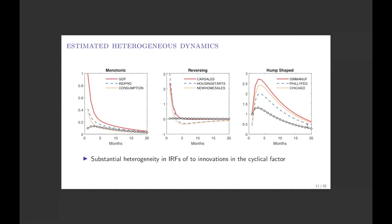If we allow each variable to have its own type of impulse response, the homogeneous assumption is clearly very restrictive. GDP and industrial production have a monotonically decaying impulse response. Investment-related variables — car sales, durable goods, housing starts — have a very front-loaded impact that switches sign after a few months, indicating a hump shape in the level. We are no longer restricting all variables to follow the same pattern; different variables can respond to the same common shock in very heterogeneous ways. This is of crucial importance.